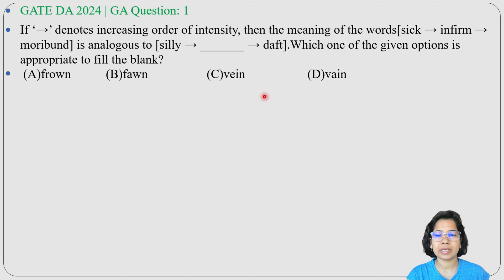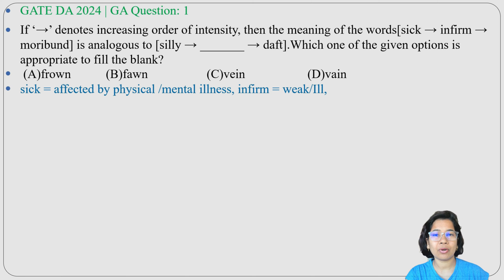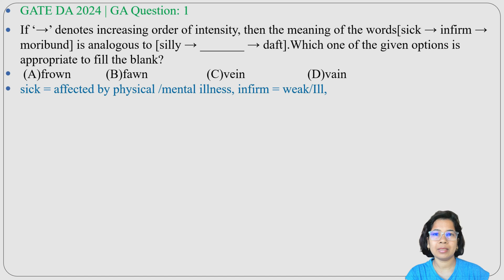First, understand the meaning. Sick means someone is not well — someone has a cold or fever. Infirm means, by getting illness for a long time, someone is weak or ill. Moribund means someone is on their deathbed, like a cancer patient in the last stage.